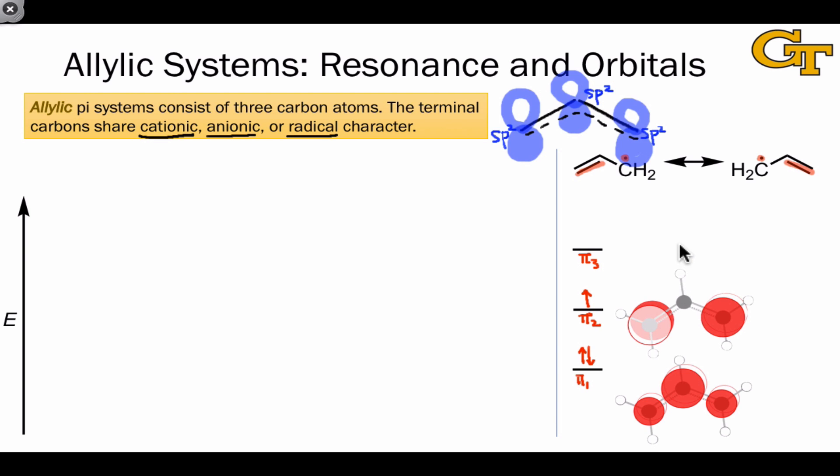In pi 2, we find a node sitting on the central carbon atom, that's why there's no orbital density here, and opposite phases on either end. Pi 2 is actually a really important orbital in all three of these cases, as we'll see. And in the case of the radical, this is referred to as the SOMO. It's the singly-occupied molecular orbital that tells us a lot about the radical nature of the species.